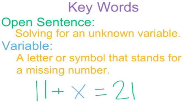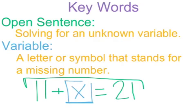So in the example 11 plus x equals 21, x is our variable, x is our unknown, and the entire sentence would be an open number sentence because you're trying to figure out what x would be. You're trying to figure out 11 plus what is going to get me to 21.